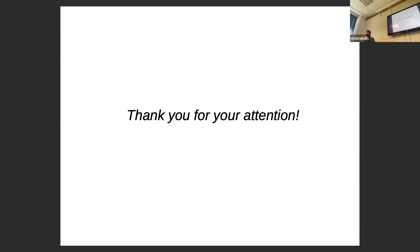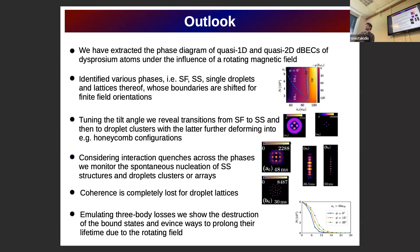During the Q&A, an audience member asks: when you do the quench, you see the formation of these small clusters — can you estimate the spacing between them? Is it related to the k-vector of the roton mode? Yes, exactly — it is related to the k-vector of the roton mode. Can you show that this is actually the most unstable mode after the quench? Yes, this could be shown by looking at the momentum distribution and showing the growth of the roton.